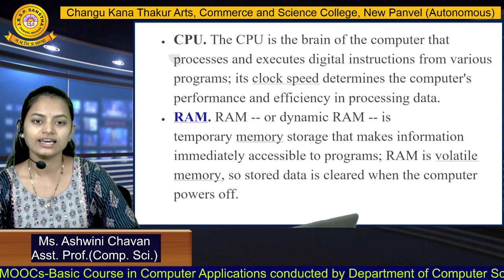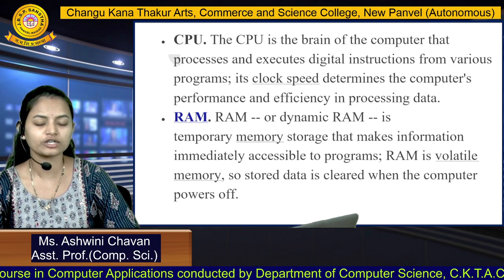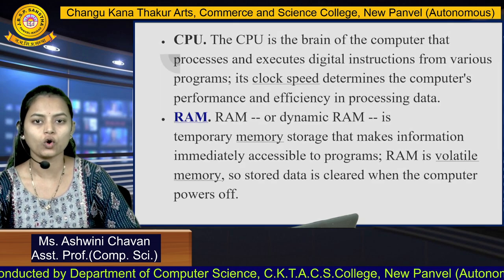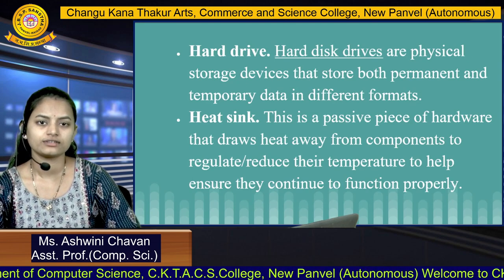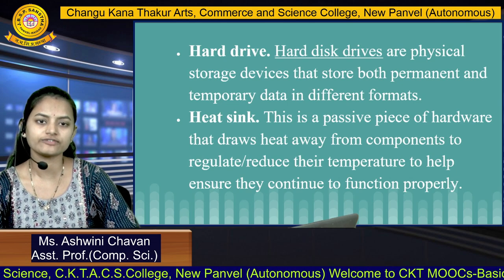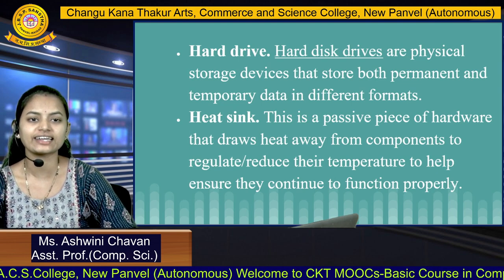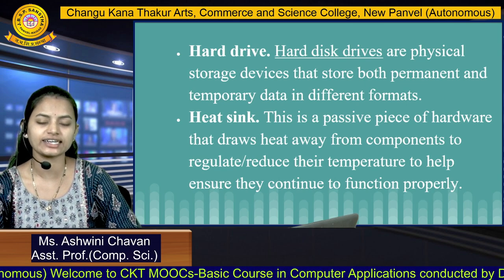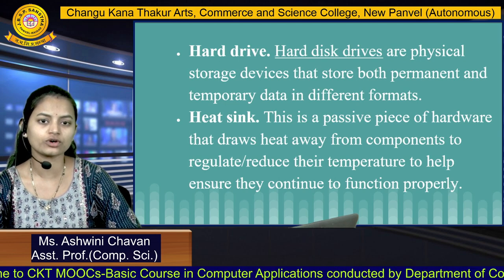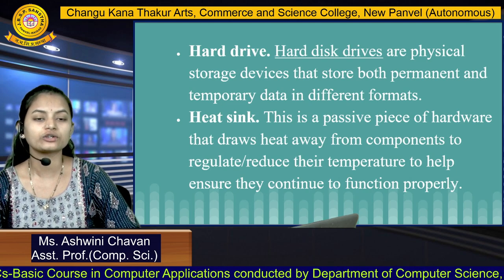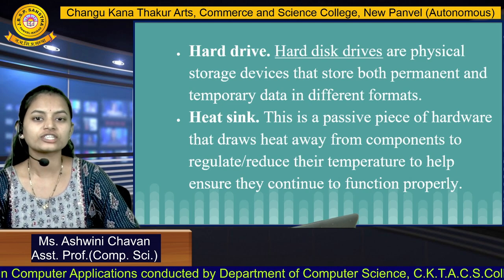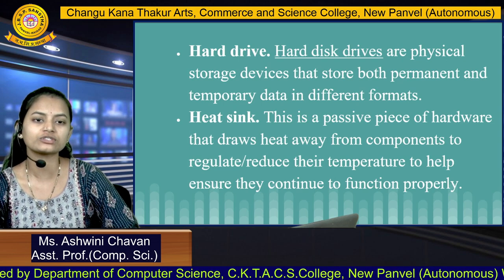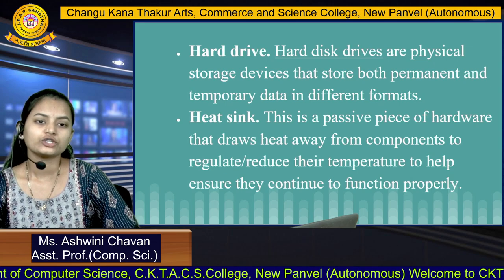RAM — Random Access Memory — is easily accessible to the user, but it is volatile memory, meaning it is cleared when the computer powers off and data is not stored permanently. The hard drive is the physical storage device that stores both permanent and temporary data. It has two options: permanent data storage and temporary data storage. The heat sink manages and reduces the temperature for the CPU, drawing heat away from components to help ensure they continue to function properly.